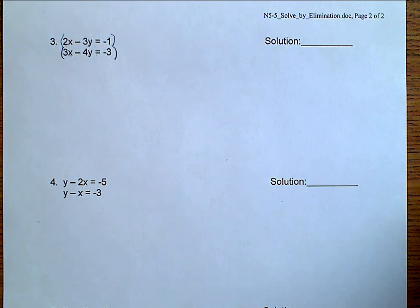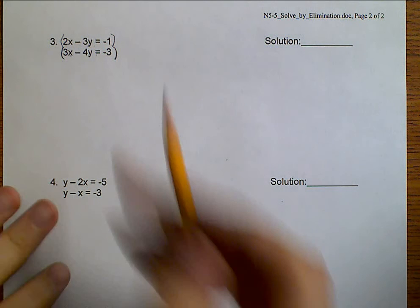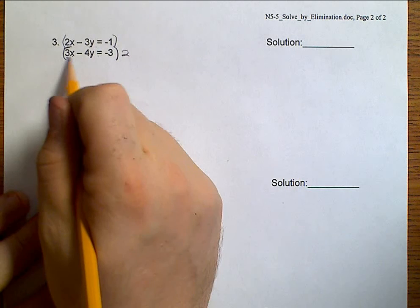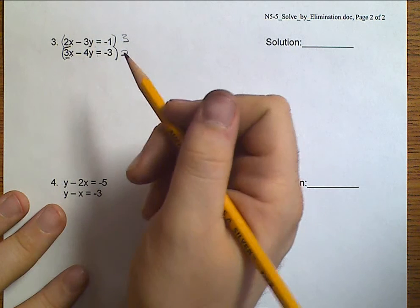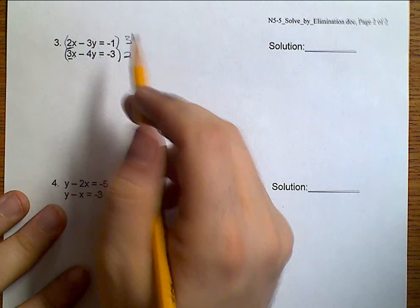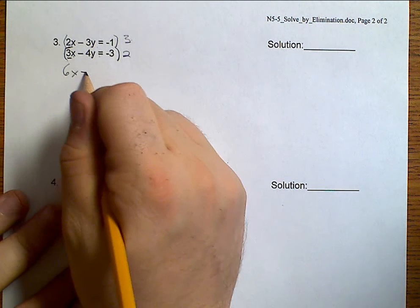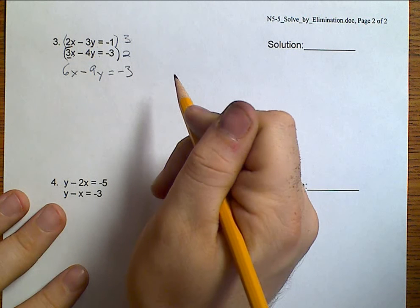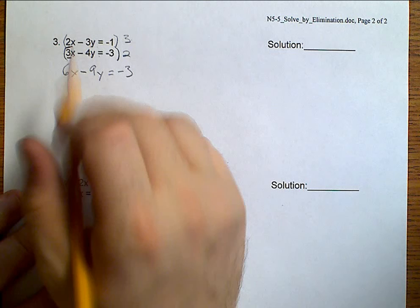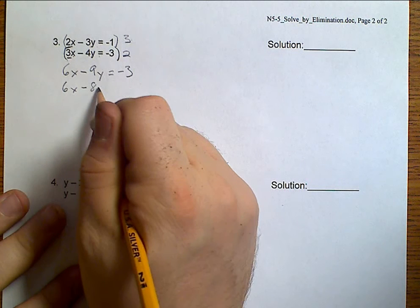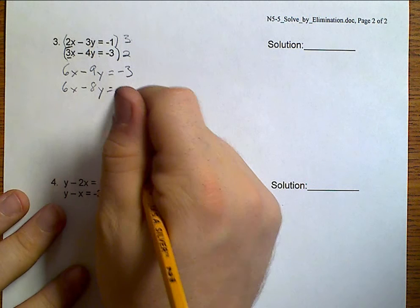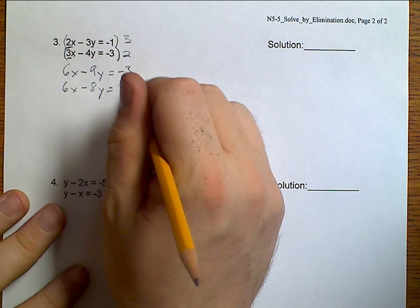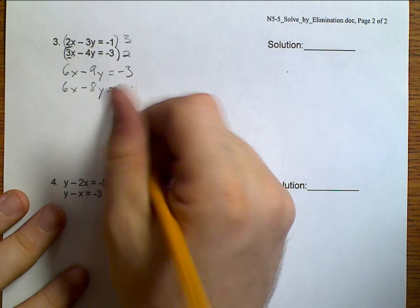And because I'm going to multiply them both, I'm going to go ahead and just choose to eliminate my X's this time. Well, I've got 2X up there, which means I'm going to multiply the bottom by 2. I've got 3X here, which means I'm going to multiply the top by 3. What this does is this is going to make my X's match. So, 3 times 2 makes 6X minus 3 times 3 is 9Y equals 3 times negative 1 is negative 3. Time for the second one. 2 times 3 makes 6X. 2 times 4 makes 8Y. 2 times 3 is 6, and it is also a negative.